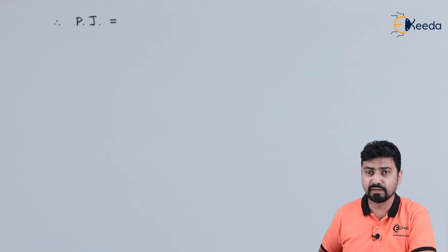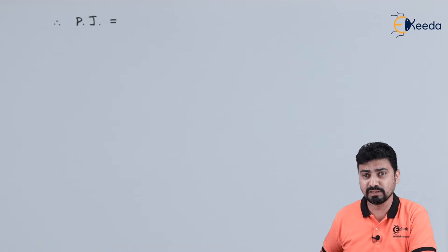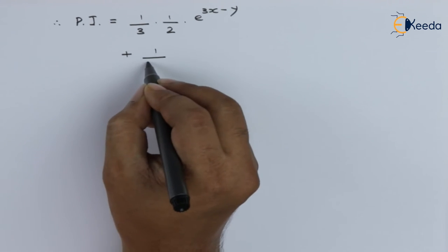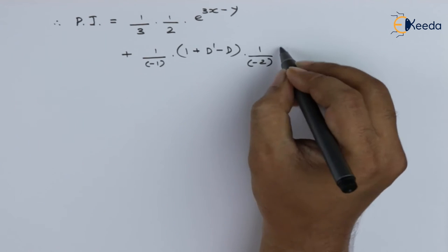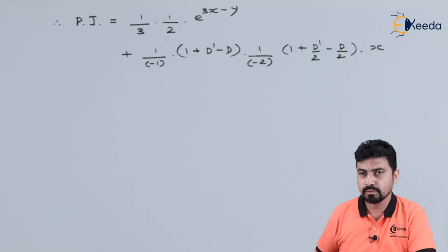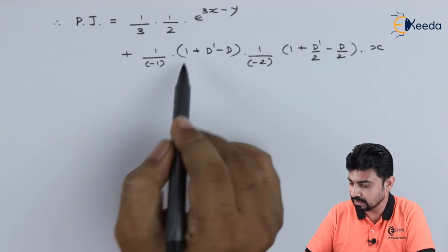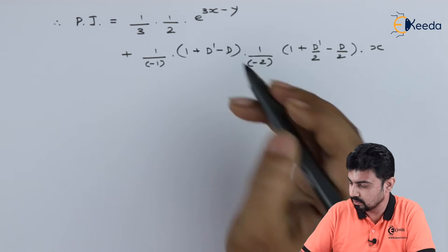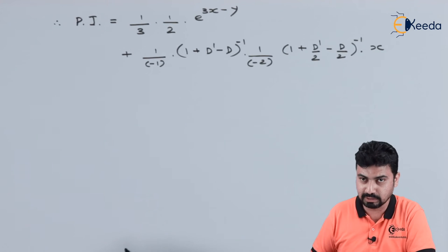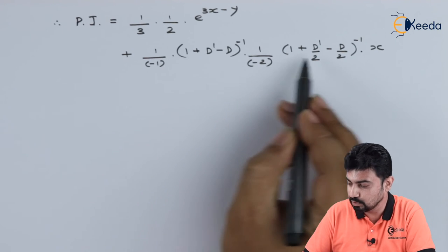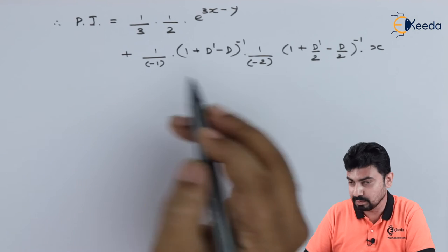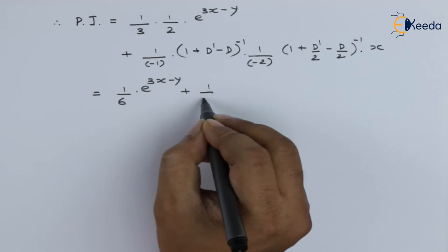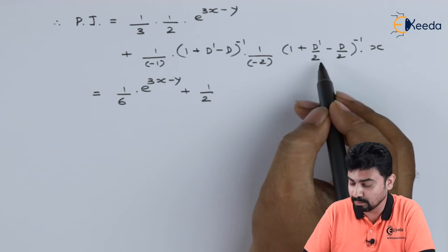Simplifying the first part of the particular integral and taking −1 and −2 common in the second part, we get expressions raised to the power −1. Both factors are now in the form (1 − something)^(−1). We then expand both of them using binomial expansion.